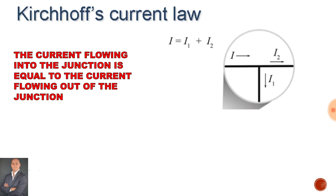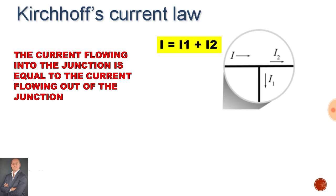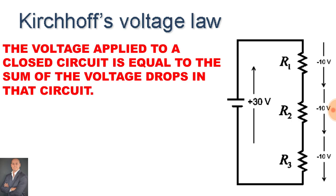Kirchhoff's current law states that the current flowing into the junction is equal to the current flowing out of the junction. Therefore, I is equal to I1 plus I2.